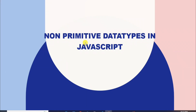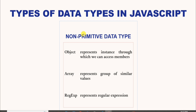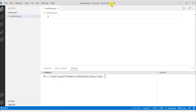Hello and welcome to YQ Academy Tutorials. My name is Priyanka and the topic for today's discussion is non-primitive data types in JavaScript. First, let's understand what non-primitive data types are. The data types that are derived from primitive data types of the JavaScript language are known as non-primitive data types. In JavaScript, we have different types like object, array, and regular expression.